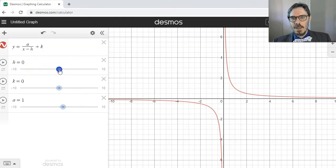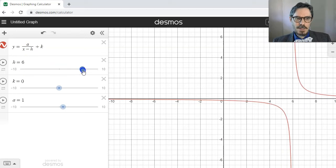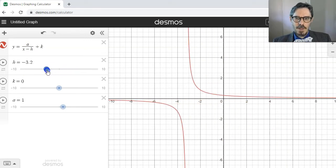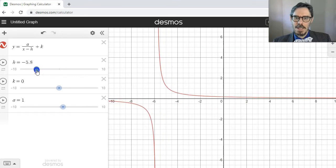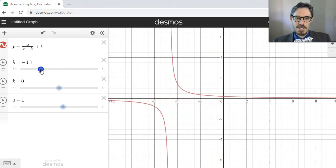So if I subtract for h a positive number, I move to the right. And if I subtract a negative number or add a positive, I move to the left. h is positive, h is negative.